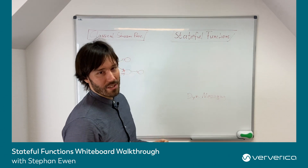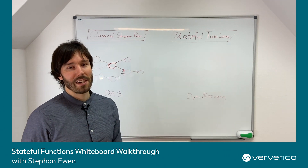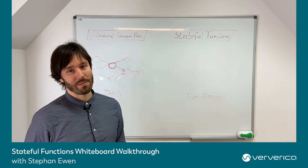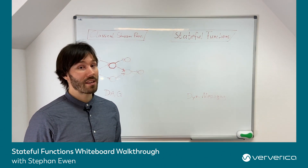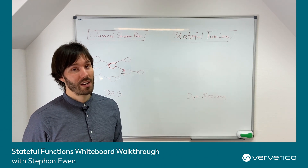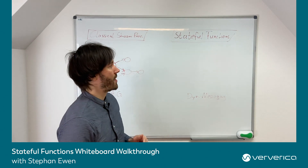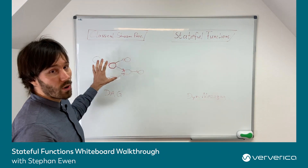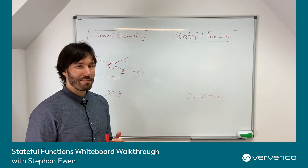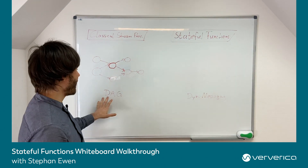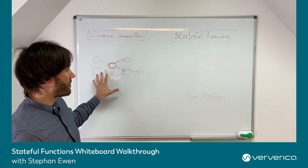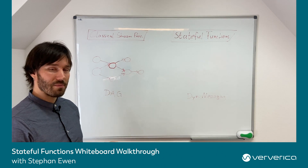In order to illustrate this, let's look quickly at some of the core properties of more traditional stream processing programs. And this is true for Flink's Datastream API, but also for pretty much every other stream processing system out there today. One core property of stream processing is that your application is defined as a directed acyclic graph of operators. This is also often called the stream processing topology.